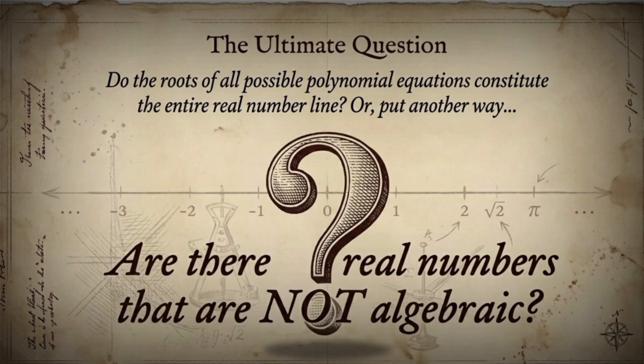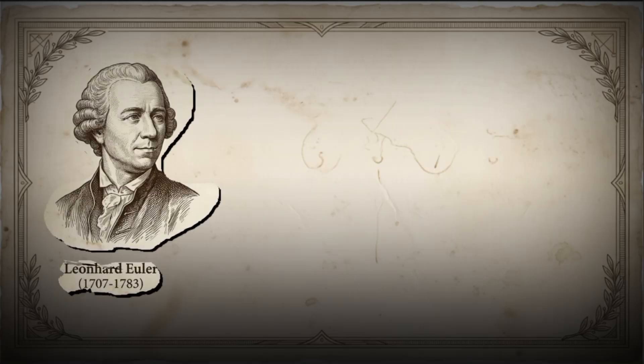The concepts of algebraic numbers and transcendental numbers were introduced by the legendary mathematician, Leonard Euler. Yes, him again, Euler is everywhere in mathematics. Here are the definitions.